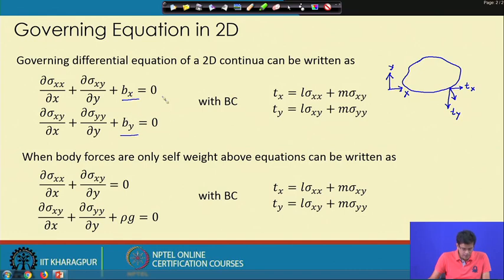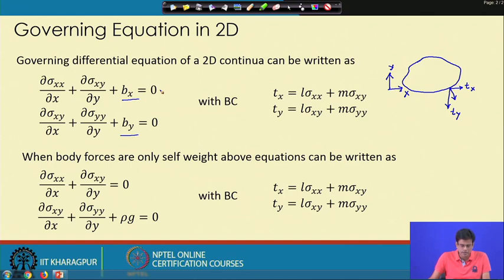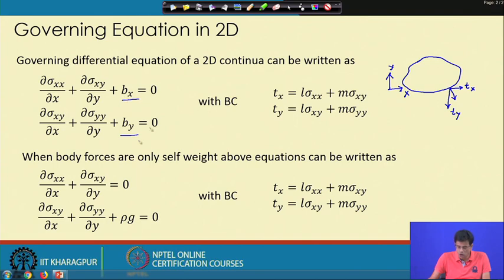The body forces bx and by appear in the governing equations. If we only take the self-weight of the beam as body force, the self-weight is ρg where ρ is the density. In that case bx = 0 and by = ρg.